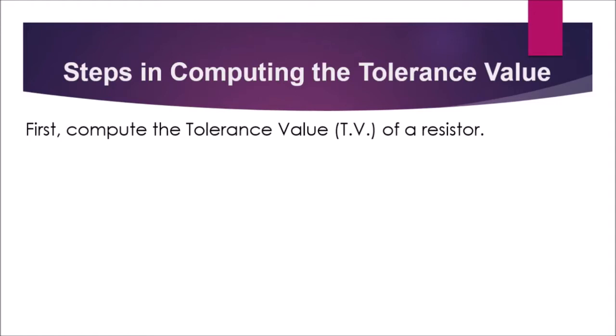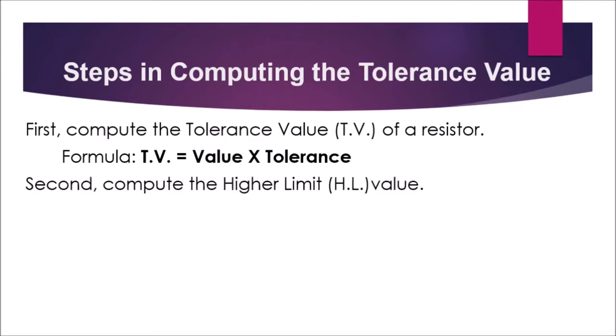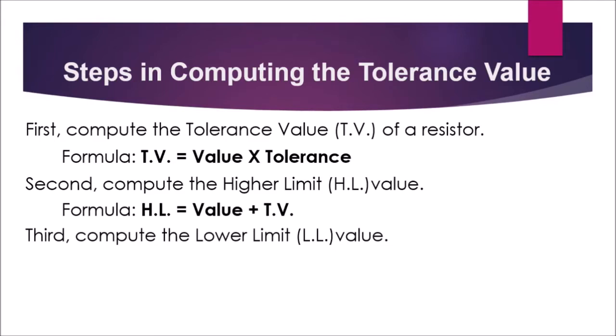First, you need to compute the tolerance value of a resistor. The formula is: TV (tolerance value) is equal to the value multiplied by the tolerance. The second step is to compute the higher limit using the formula: higher limit is equal to value plus the tolerance value. The third step is to compute the lower limit using the formula: lower limit is equal to value minus the tolerance value.